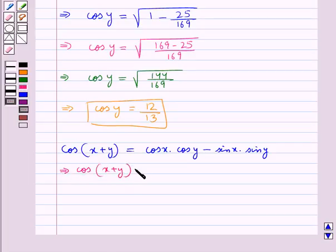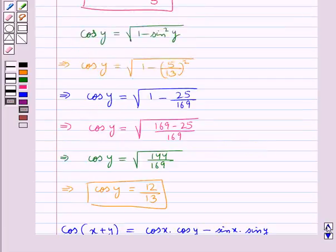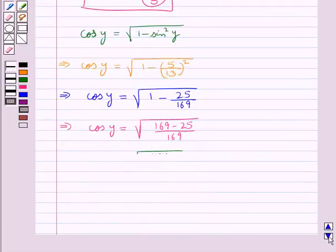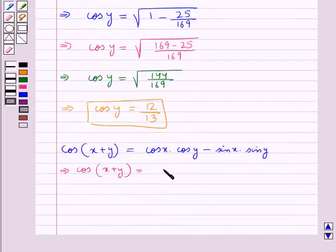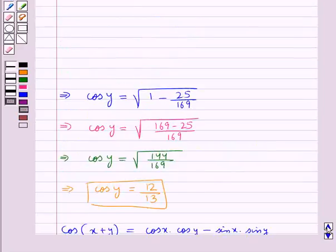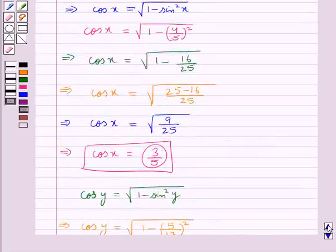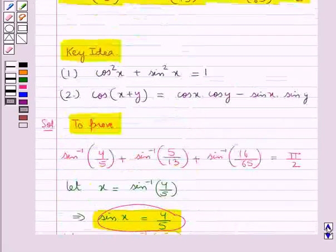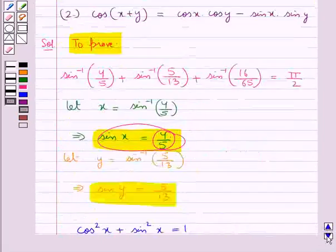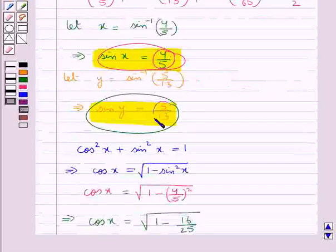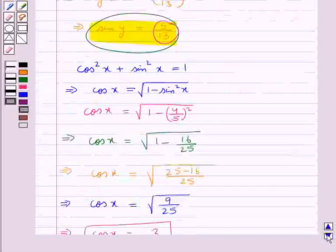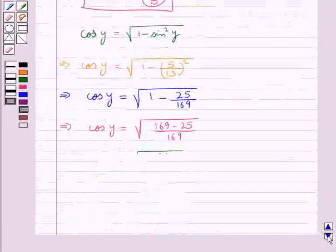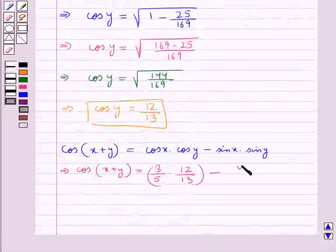Substituting the respective values, cos of x plus y is equal to the value for cos x which is 3 upon 5, into cos y which is 12 upon 13, minus sin x which is 4 upon 5, multiplied by sin y which is 5 upon 13.